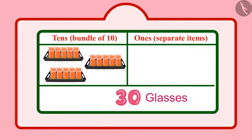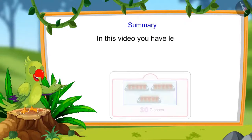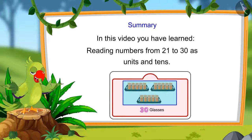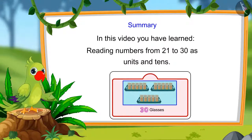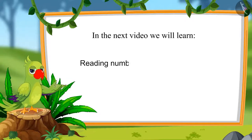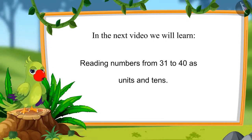So, children, today 30 glasses of sherbet were made in Chotu's house. That was all for today. In this video, you learned numbers from 21 to 30 and how to read those numbers as units and tens. In the next video, we will learn to read numbers from 31 to 40 and how to read those numbers as units and tens. Until then, bye, children.